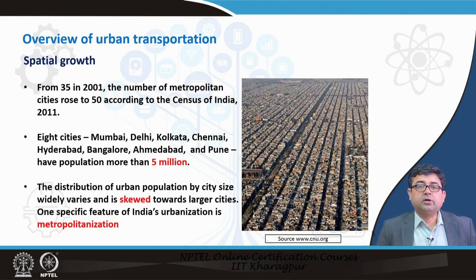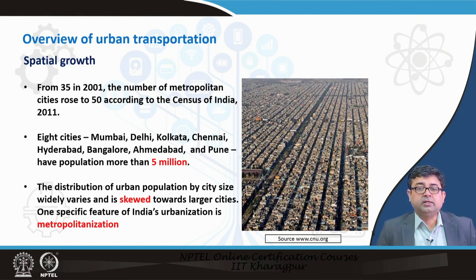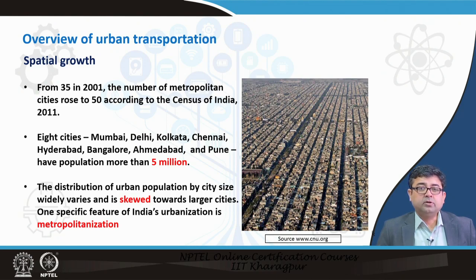From just 35 in 2001, the number of metropolitan areas has grown to more than 50. Cities with populations of more than 5 million now number 8 cities. In addition to the 4 mega cities, we are also seeing the rise of cities such as Hyderabad, Bangalore, Ahmedabad, and Pune. All of these areas are attracting people because of employment opportunities, and everybody seems to be moving into these cities.